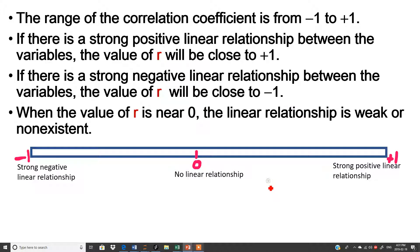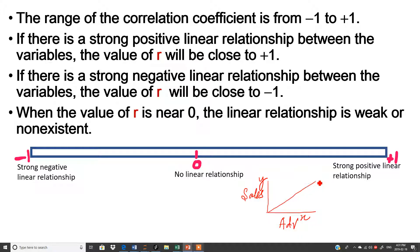What is the meaning of this? Suppose we have two variables. On the x-axis, we take the independent variable — for example, advertisement. On the y-axis, we take the dependent variable, sales. If advertising increases and sales increase, and all the points lie on one line, this means it is a positive correlation.